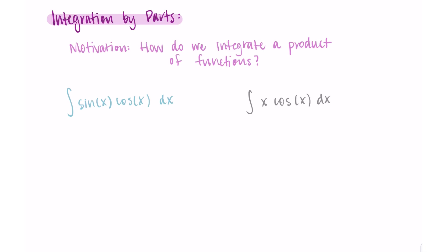Okay, so I've written here two example problems that have products of functions that we're trying to find anti-derivatives for. So the first example has a sine times cosine, and the second example is x times cosine x. So I'm going to say that for this first example, we can actually solve this already by using straightforward u substitution.